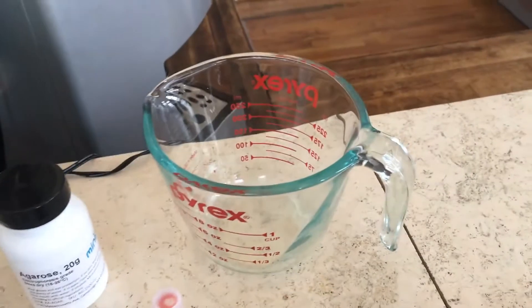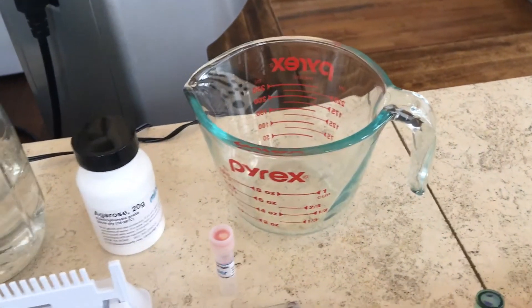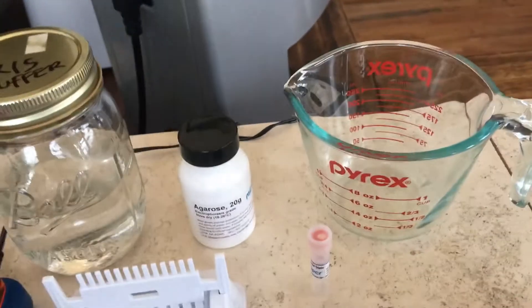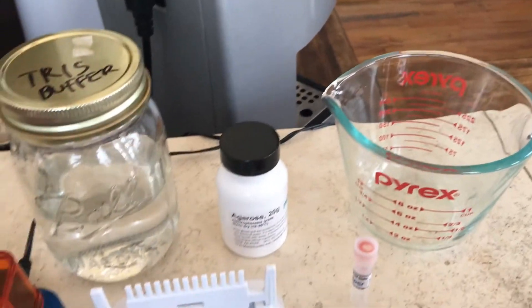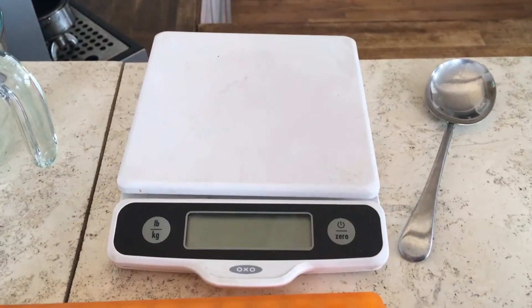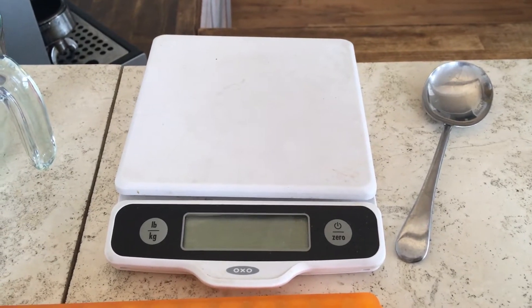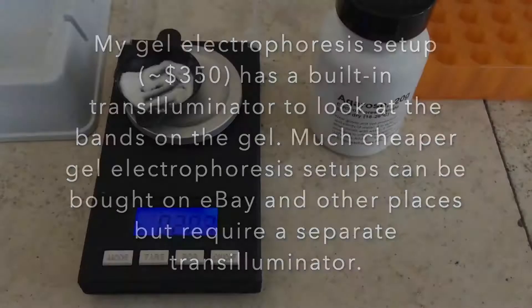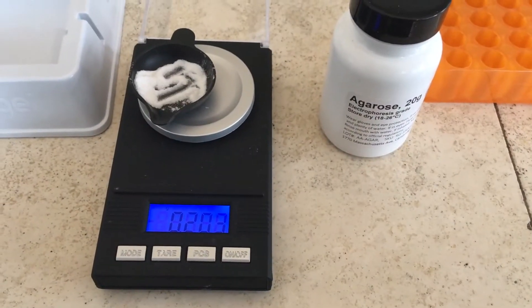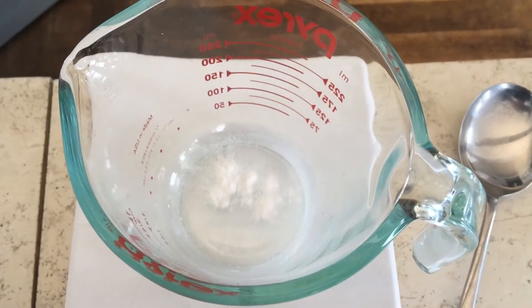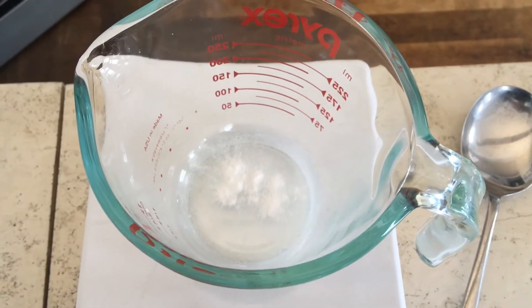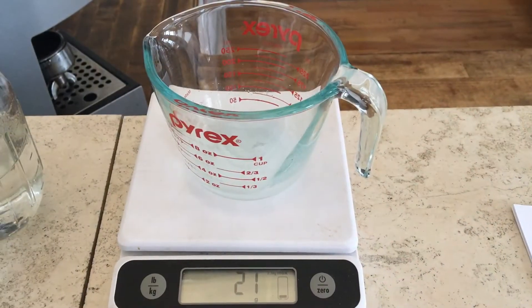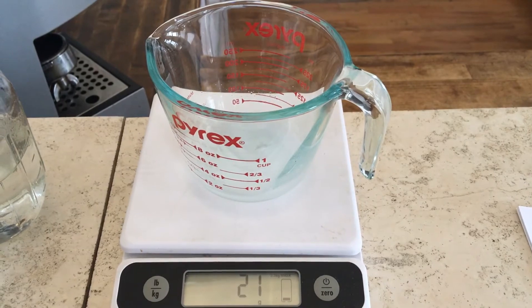We're going to need a glass jar because we're going to boil the agar for 30 seconds in the microwave. Here's our Tris buffer that we're going to do that with, and we're also going to use a regular scale to measure out the Tris buffer. I've measured out 20 milligrams of agarose. I've put that into the glass jar. Measure out 20 milliliters of the buffer. And we're going to put that in the microwave for 30 seconds.